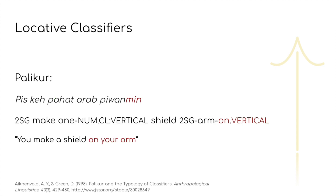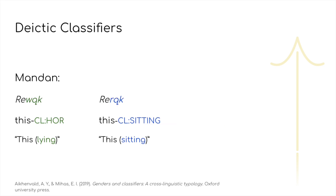There are also locative classifiers, which are exceedingly rare and occur in adpositional phrases, classifying nouns in much the same way as verbal or noun classifiers, usually focusing on the shape or form of the noun. Another rarer form of classifier would be deictic or demonstrative classifiers. These occur with demonstratives or other deictic words, and usually categorize nouns in terms of position or orientation.